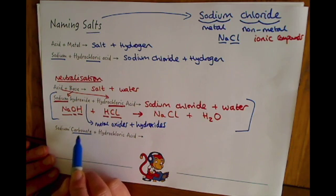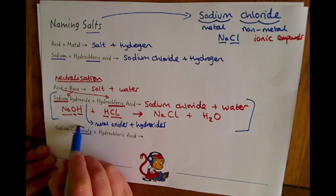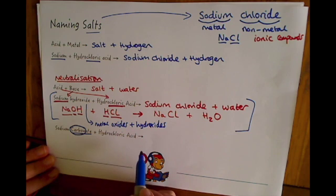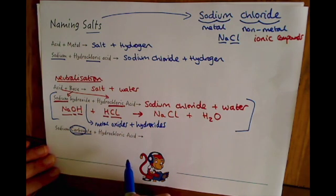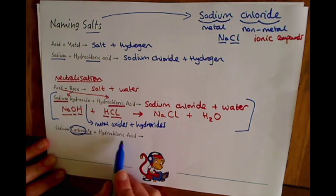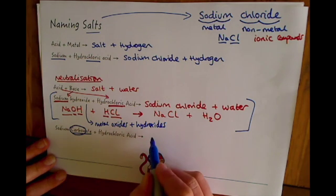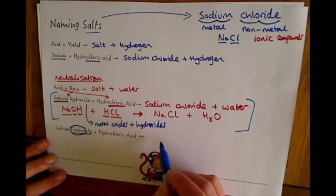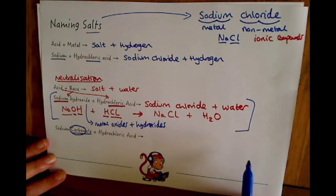If you notice that word carbon, I want you to think to yourself that you're also going to make carbon dioxide. So if you see that word carbon in the reactants of the equation, think to yourself I must be making carbon dioxide as well. So sodium carbonate plus hydrochloric acid makes a salt plus water plus carbon dioxide.